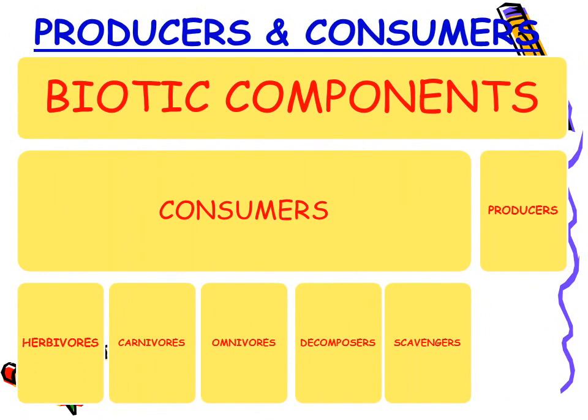Now coming to the second topic: producers and consumers. We have studied about biotic components. These living things, or biotic components, based on their ability to make food — whether they make food or do not make food — are divided into producers and consumers. Consumers are further divided into herbivores, carnivores, omnivores, scavengers and decomposers. We will learn more about these terms in this video.